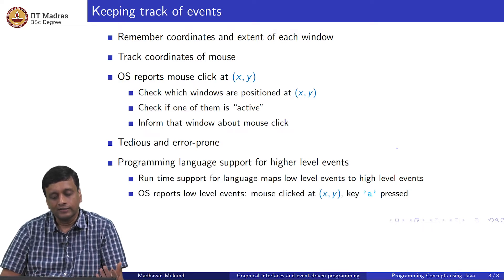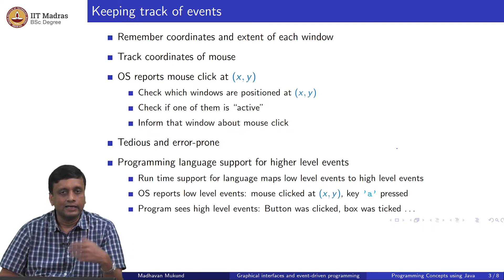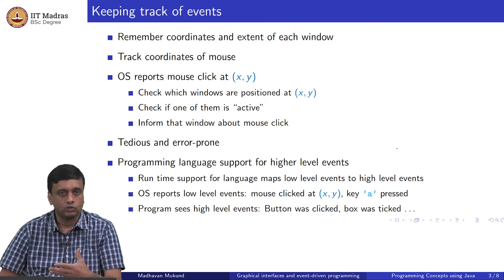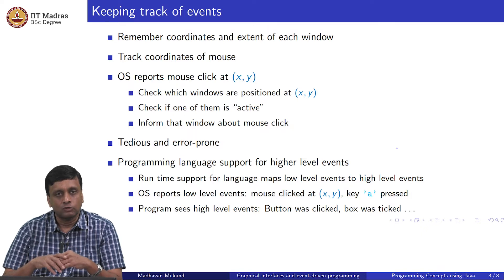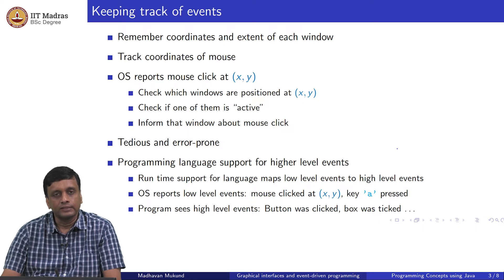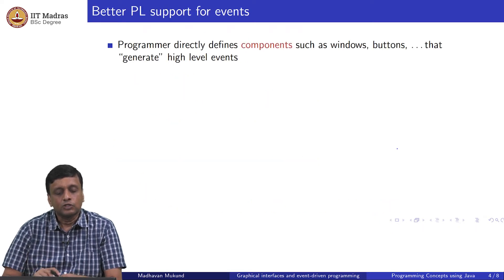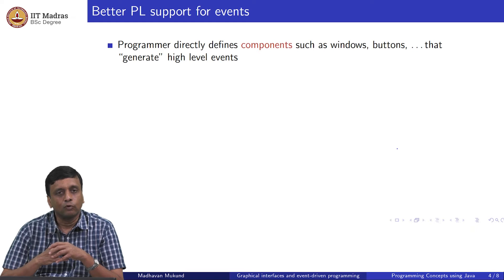That is a higher-level event. The OS will report the lower-level events — what was clicked, what was pressed — and the program will automatically understand the higher-level events: this button was clicked, or that box was ticked. The programmer does not have to know exactly where the mouse was clicked in terms of screen position, but rather which part of the interface was clicked. If you want even better programming language support, what we would like is that the programmer directly reasons about the kind of components used when designing graphical interfaces.